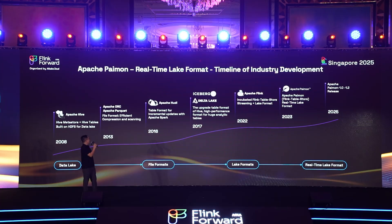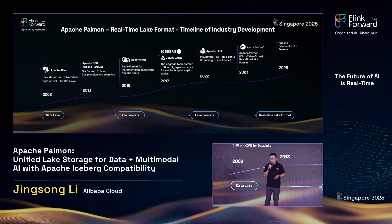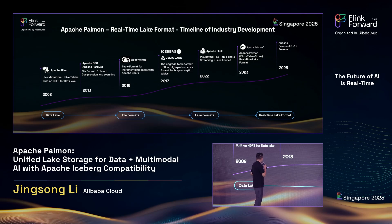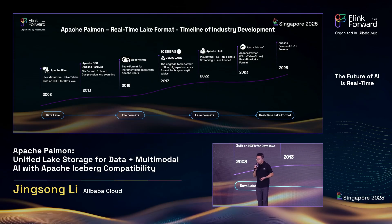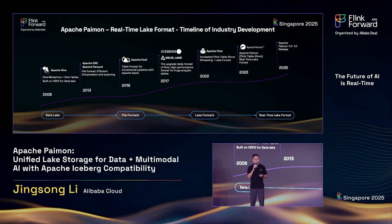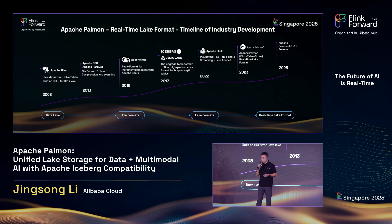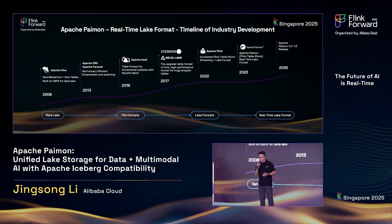The first thing I want to share is the timeline of industrial development and also the history of the birth of the payment. You can see the timeline. In 2008, Apache Hive formed. Hive is Hive Metastore and Hive Cycle and Hive Table. Hive is built on the Hadoop ecosystem, built on HDFS for the data lake. And then the colon storage was born. The famous colon storage is FireFormat, is ORC and Parkway.